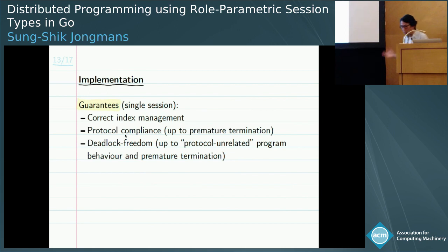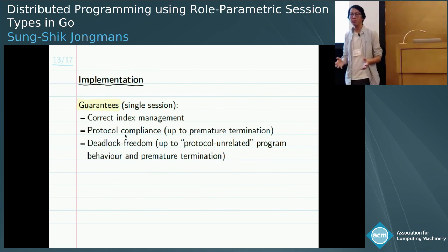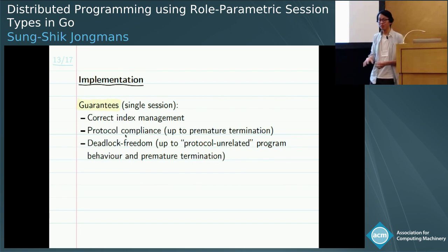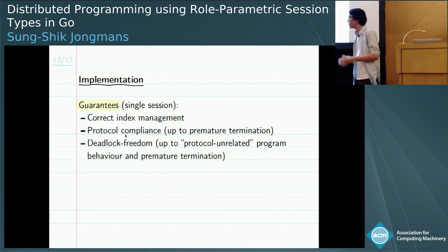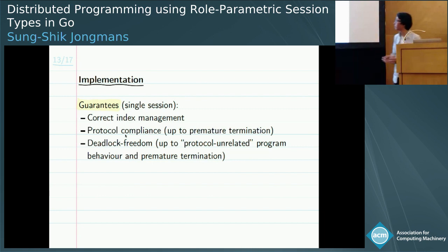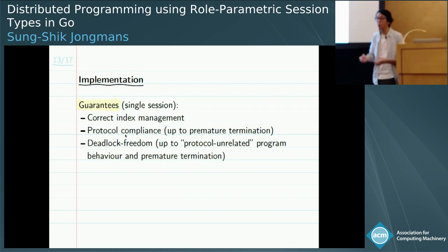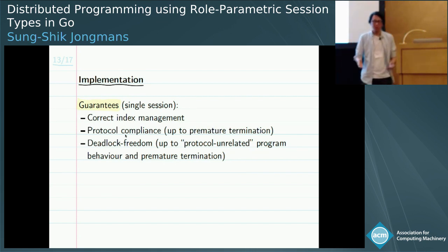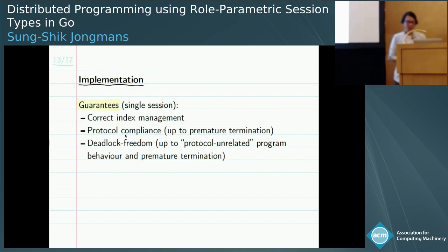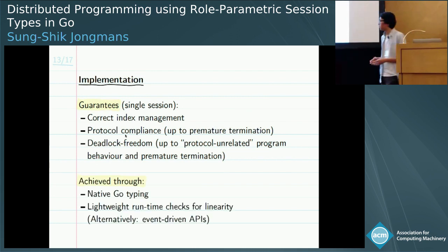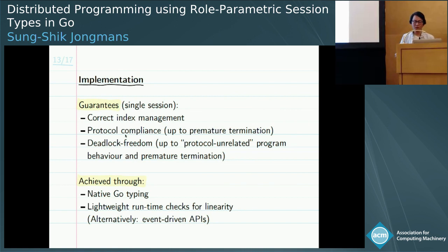The implementation guarantees include: correct index management, which has been fully internalized in the generated API — a common source of errors that programmers no longer need to think about. We also have protocol compliance and deadlock freedom, up to standard assumptions in multiparty session type implementations — for instance, if a program contains an infinite loop unrelated to communications, we cannot guarantee deadlock freedom. These guarantees are achieved through native Go type checking plus lightweight runtime checks for linearity, though alternative API styles without runtime checks can also be generated.